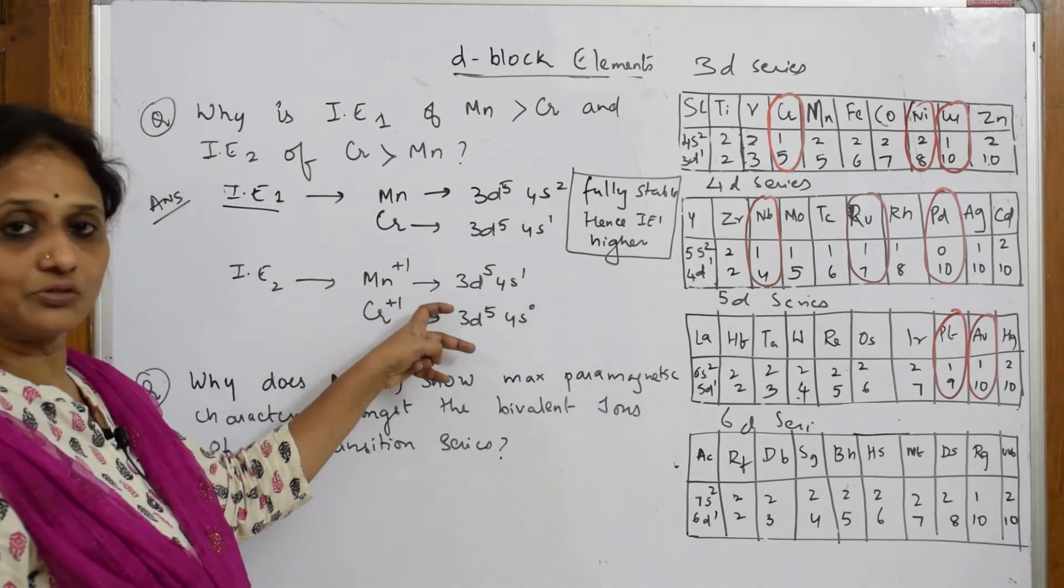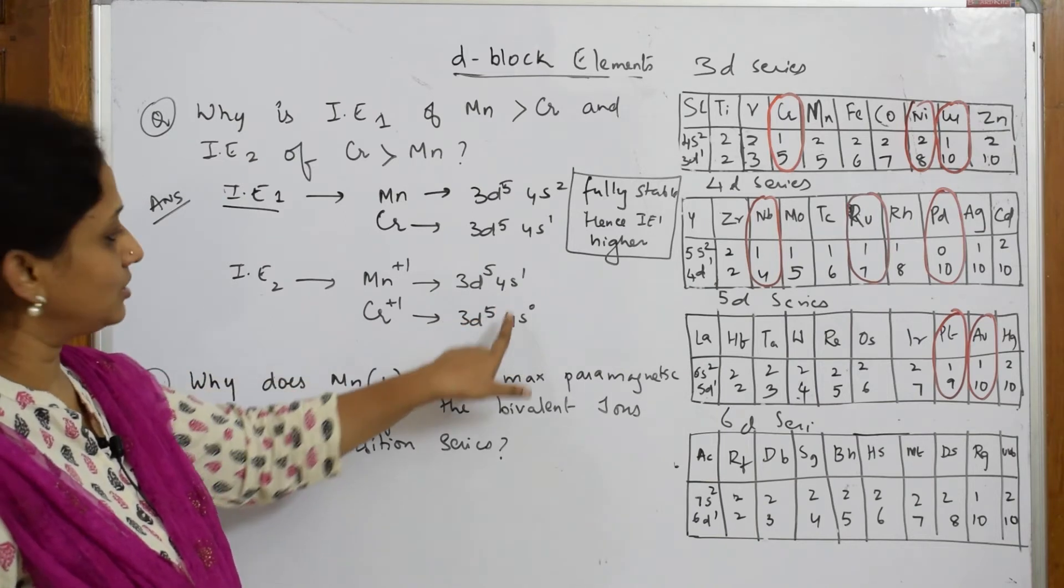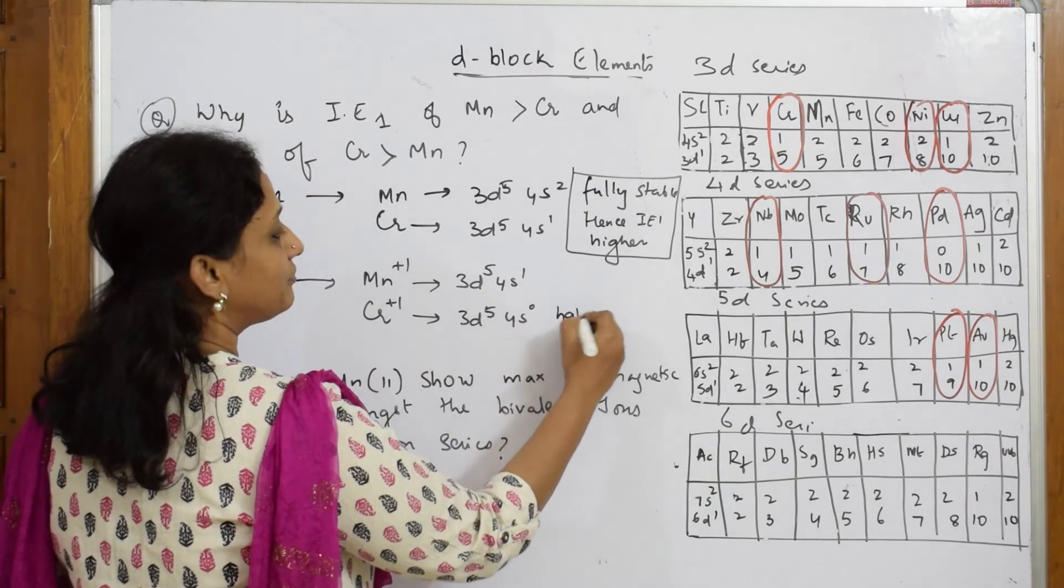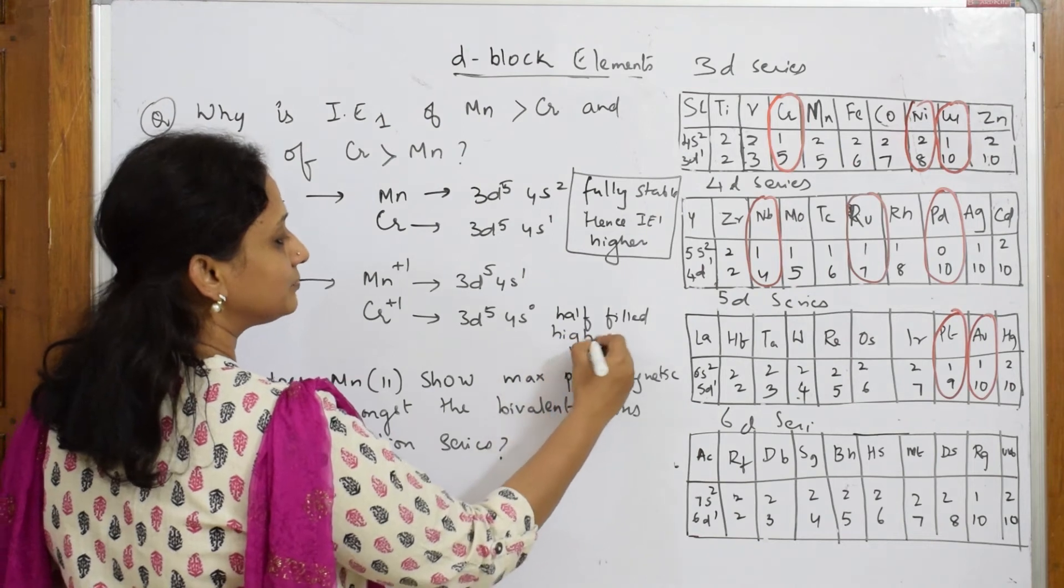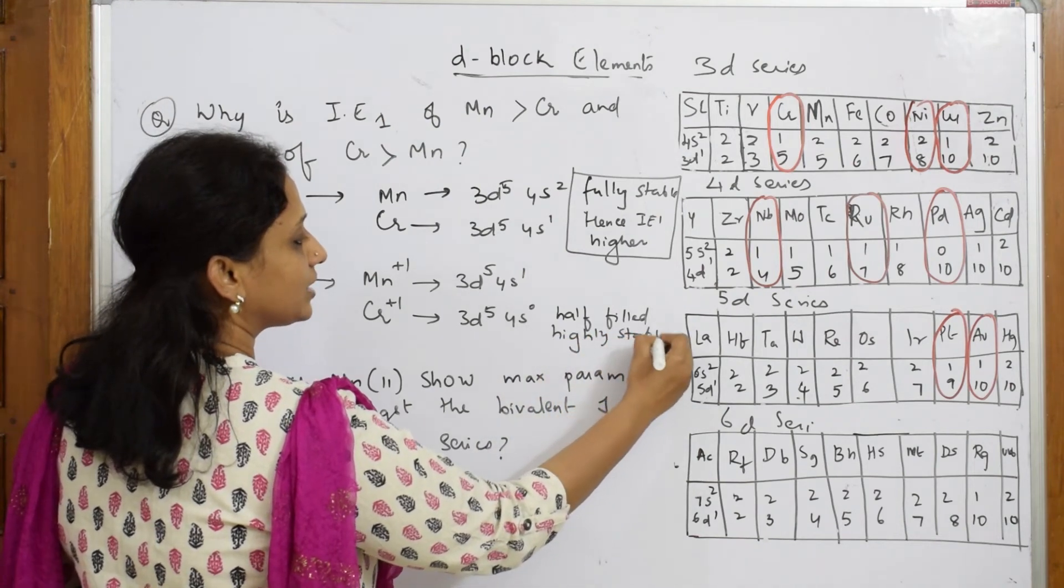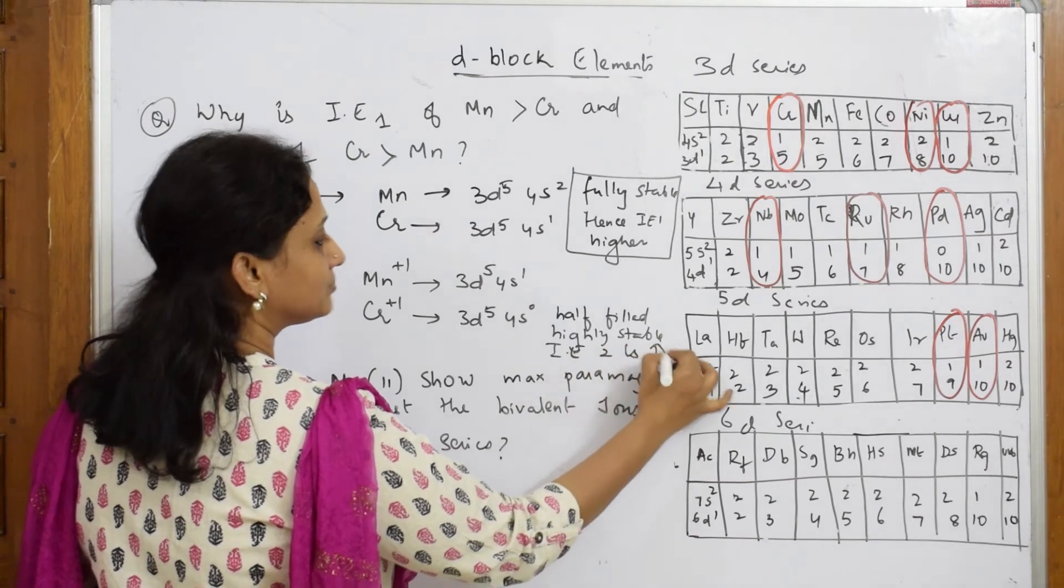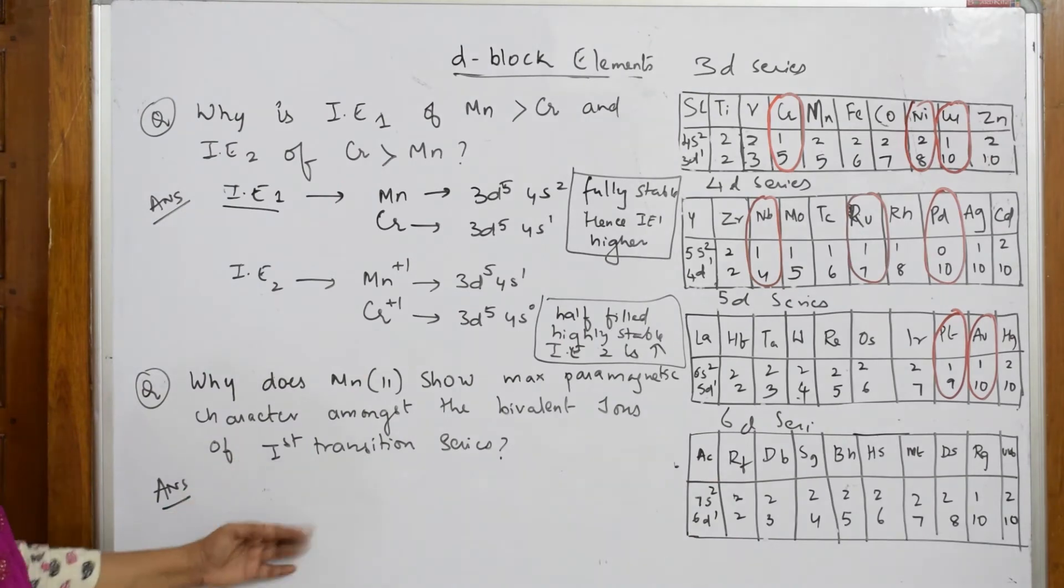Now which is more stable? Here you have an unpaired electron, so it's easy for me to take out the electron. But here this is half-filled and highly stable. Hence IE2 is greater. You're going to write that reason after taking that electron.